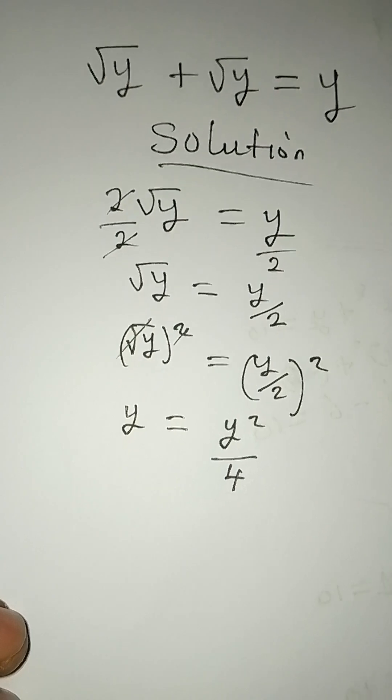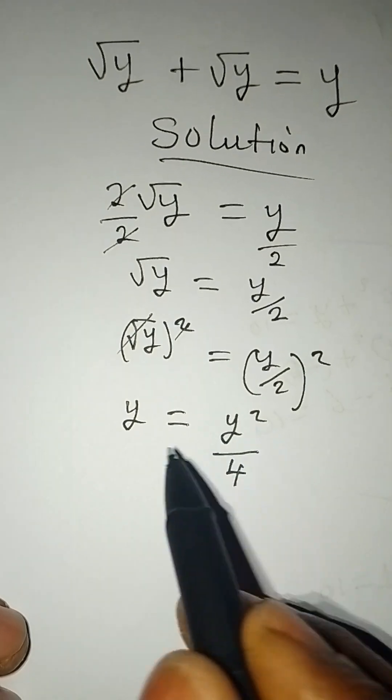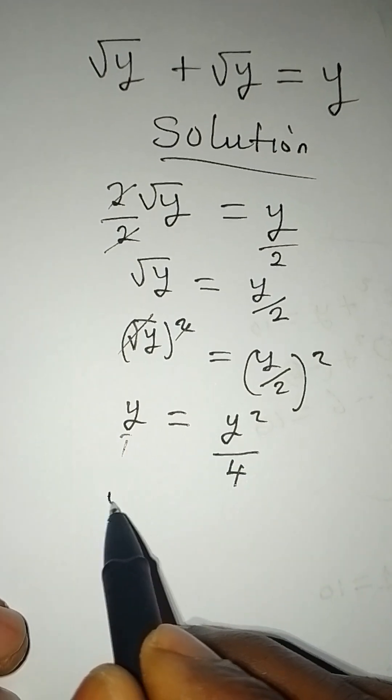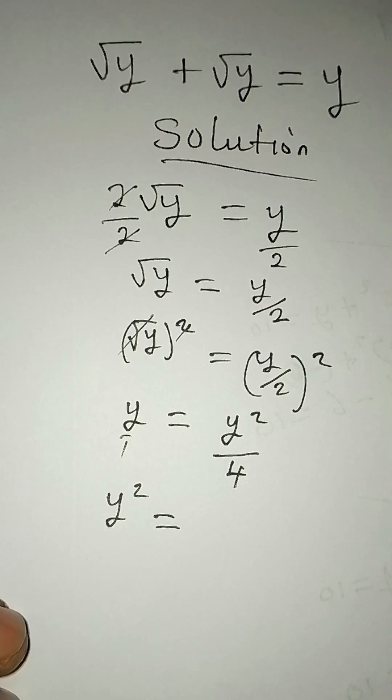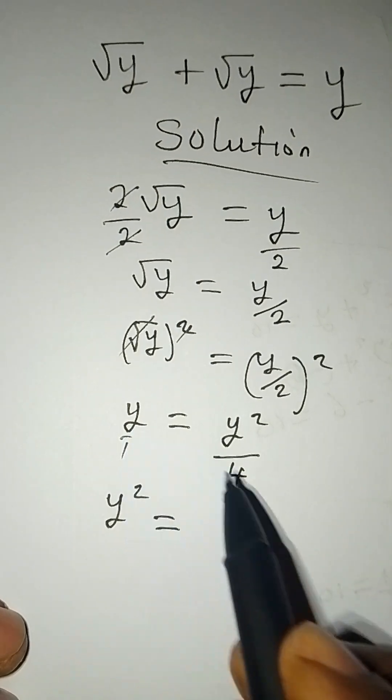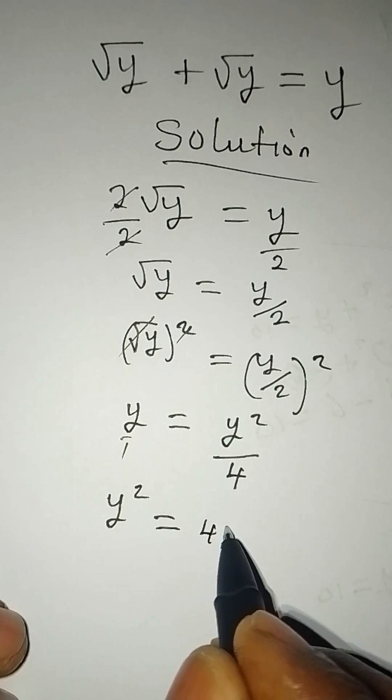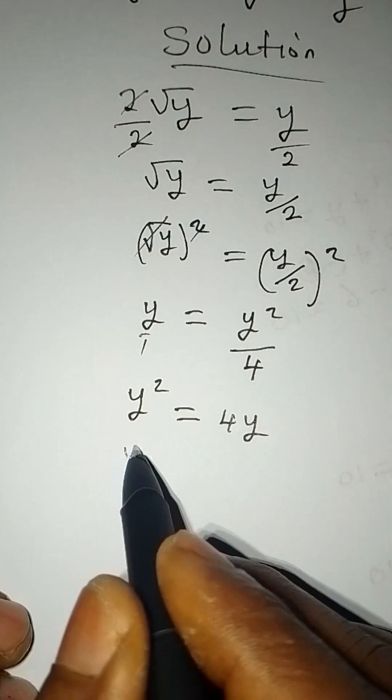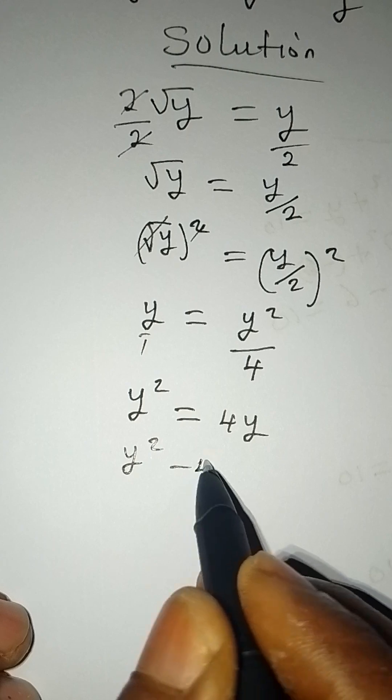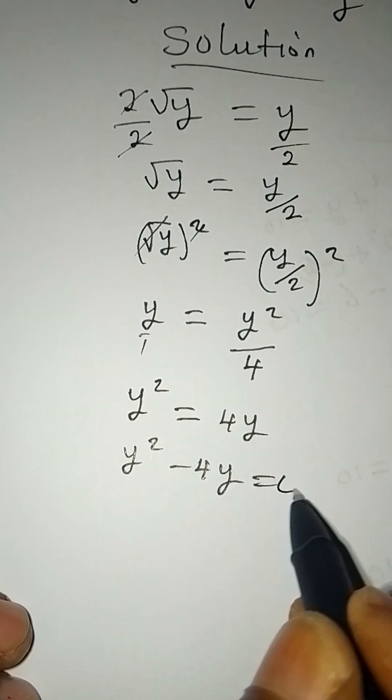Now we cross multiply, so y² = 4y. Rearranging this, we get y² - 4y = 0.